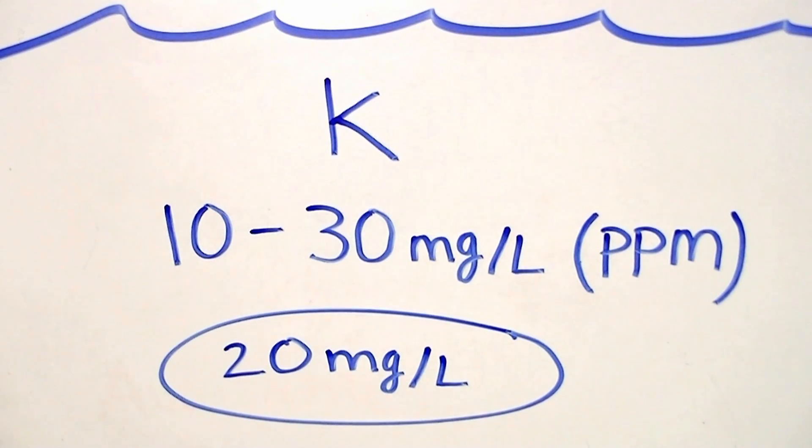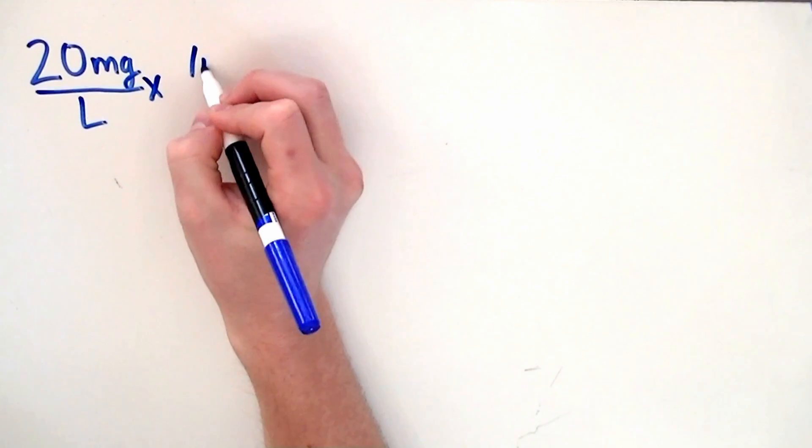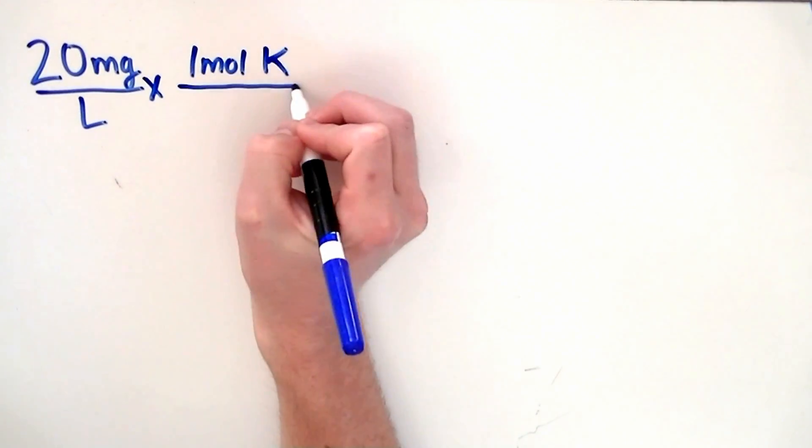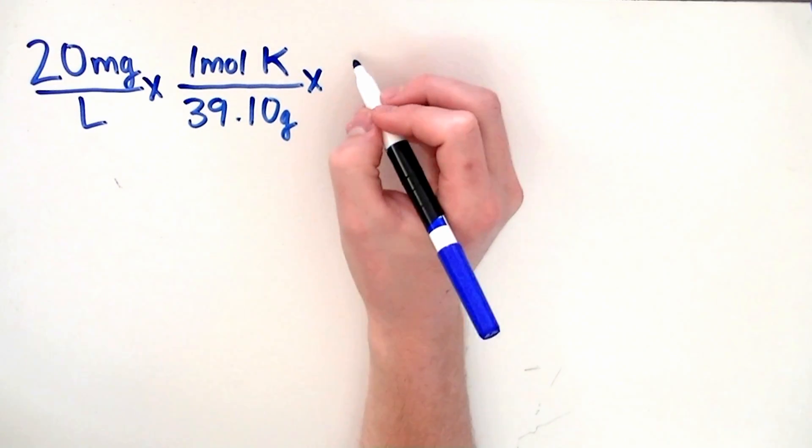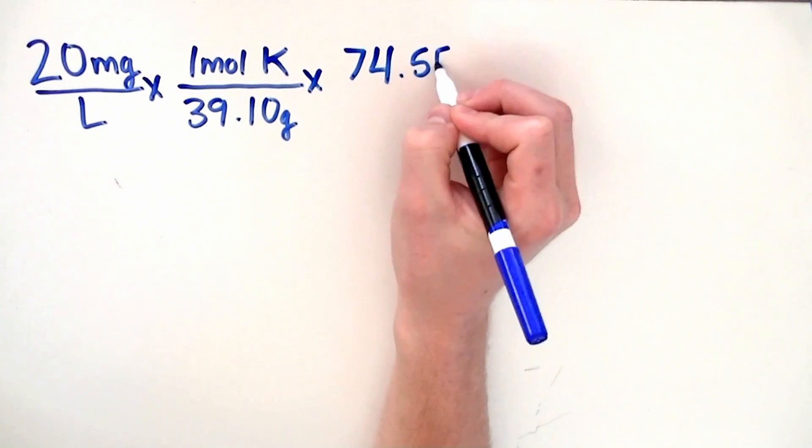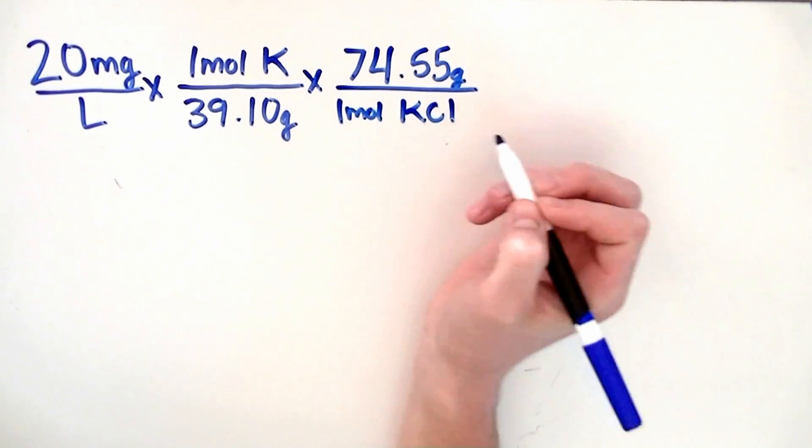Now to make our solution we need to start by doing some basic stoichiometry. There's a few variables throughout this calculation but we'll go over them at the end. We start by writing down our desired concentration being 20 milligrams per liter. We then divide by 39.1 grams which is the molecular weight of potassium. Next we multiply by 74.55 grams which is the molecular weight of our fertilizer potassium chloride.